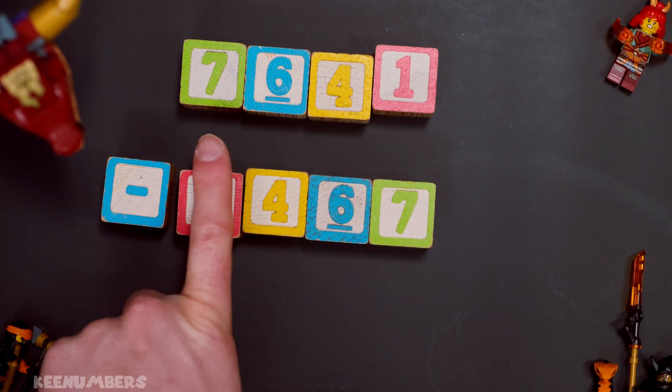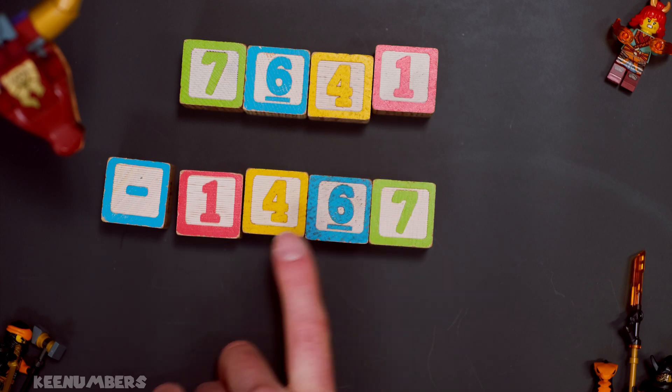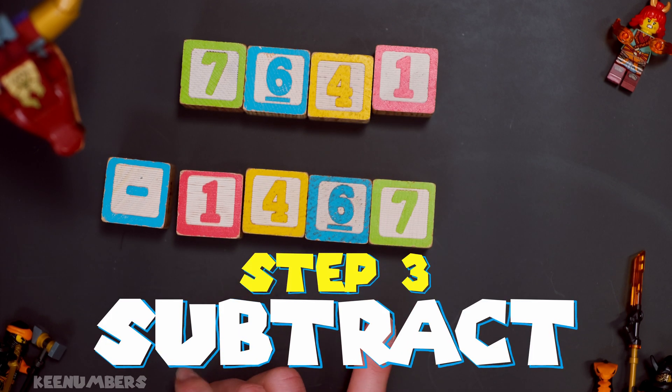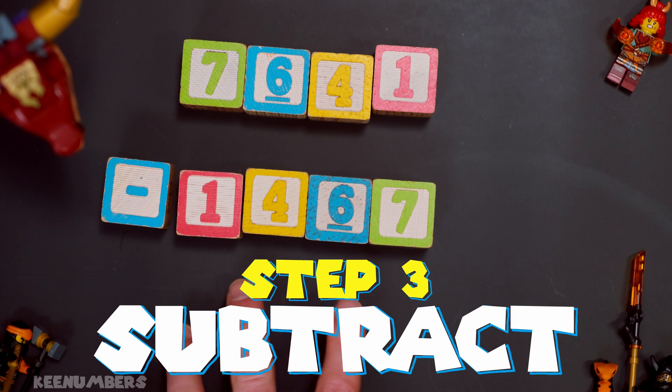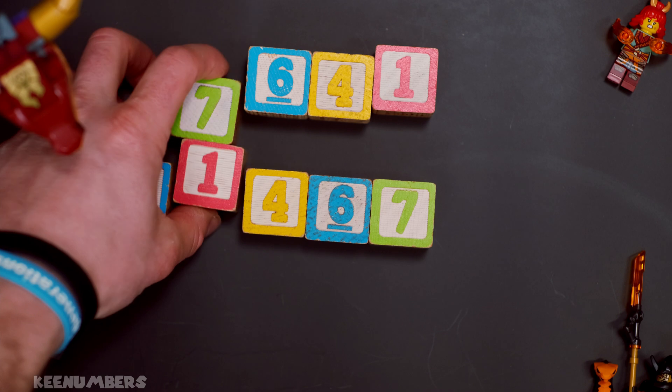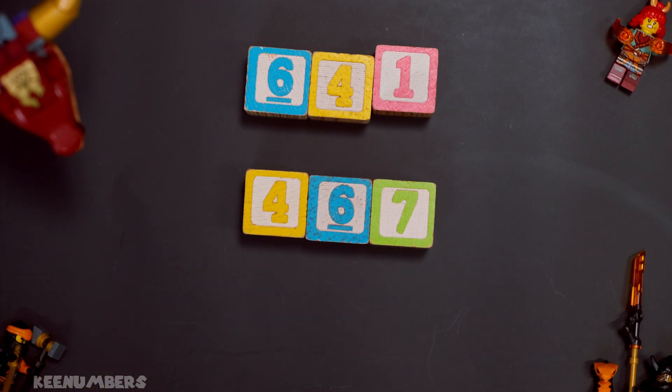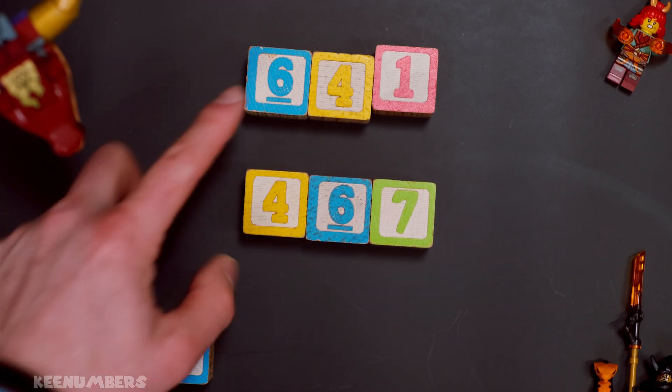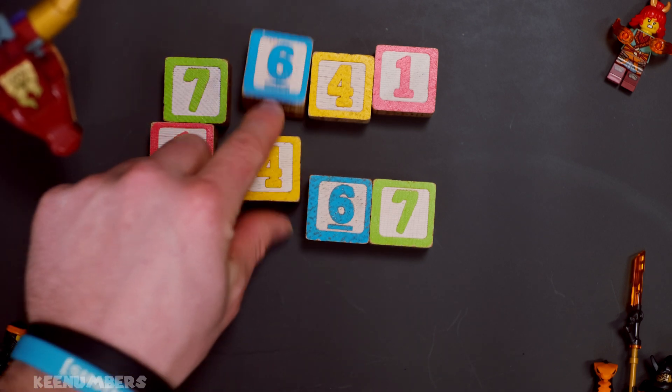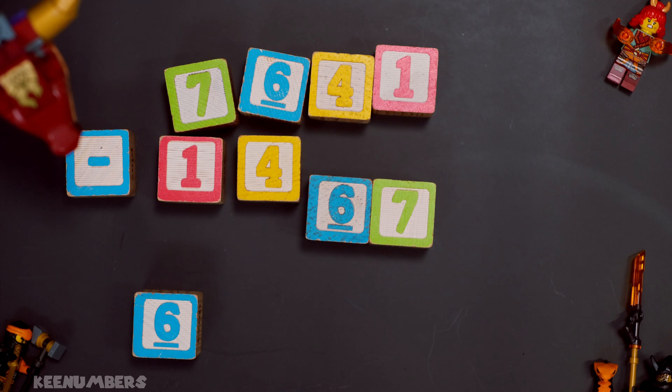So you're going to subtract 7,641 from 1,467. Remember, the original number was 7,164. Bear with me. This is really cool. When you subtract seven minus one, you're going to get six. When you subtract six minus four, what are you going to get? Two. You're going to get two.